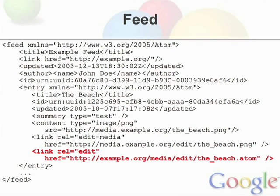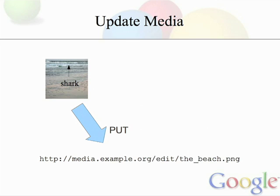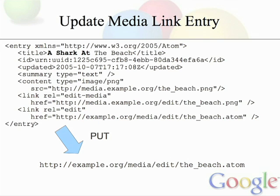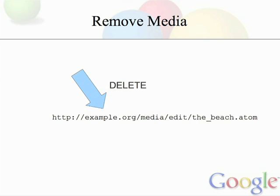The edit link points to the media link entry, and you can manipulate that just like we did previously with entries. I can do a GET on that to get the entry, a PUT on it to update it, and send it a DELETE to remove it. Then there's the edit media link — that supports GET and PUT. So if I wanted to update that image, I would change the image and PUT the image — an HTTP PUT — to the edit media URI. If I wanted to update the title of that image, I would change the media link entry and PUT that entry — HTTP PUT — to the edit URI. And if you wanted to remove that media, you would send a DELETE to the edit URI. That's the way you remove both the metadata about the image and the image itself — you only need to send one DELETE, and that will remove both of them.